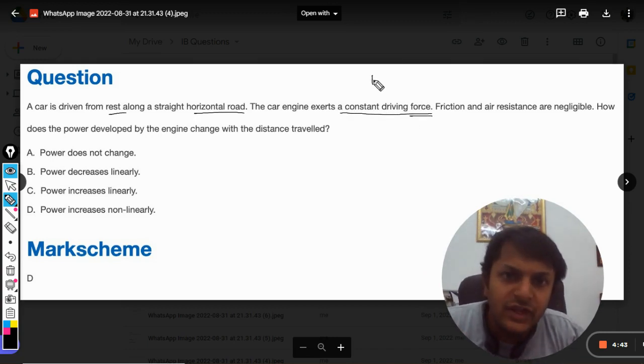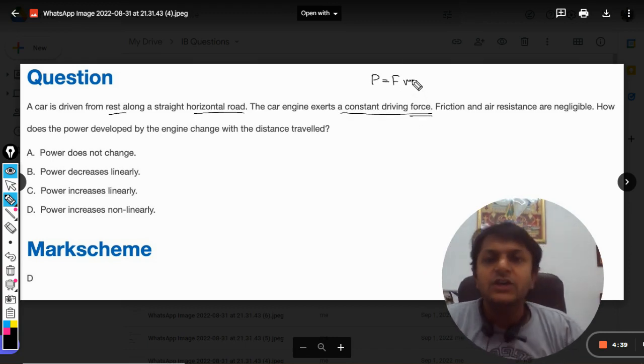We know that there is a formula like power is equal to force into velocity, P = F × v. In this question they say that force is constant, but there are many difficult questions in which the power is given as constant but not the force. That becomes an altogether different problem.